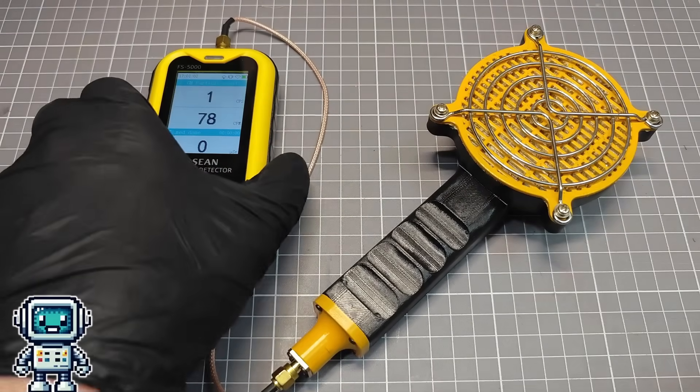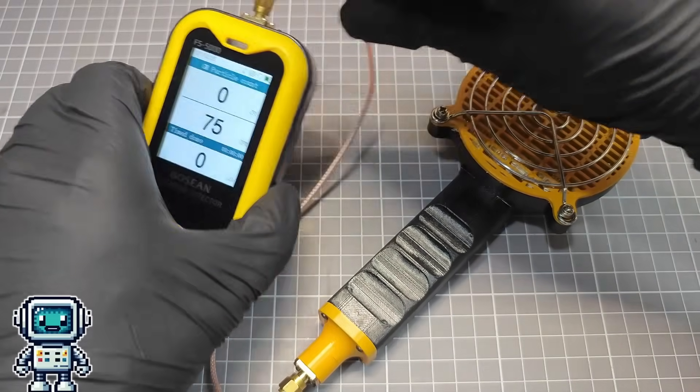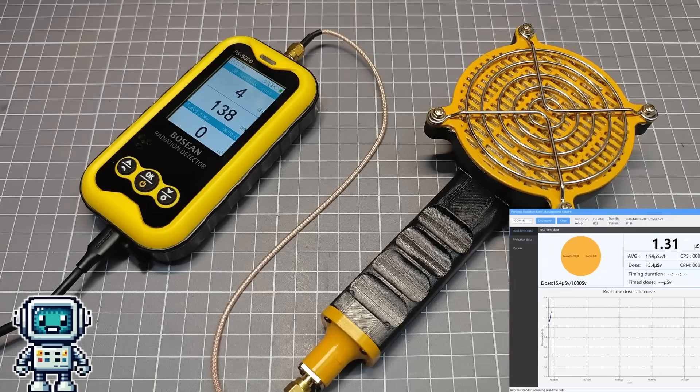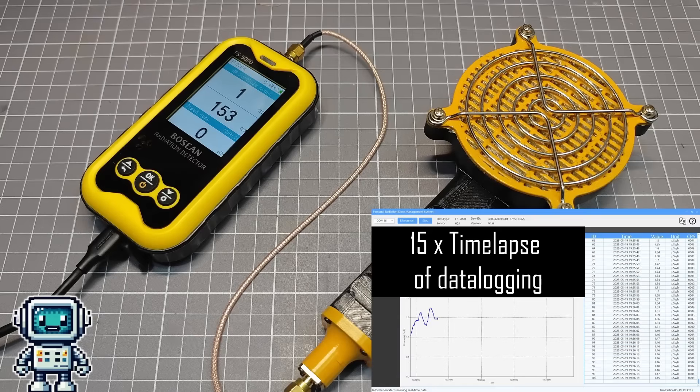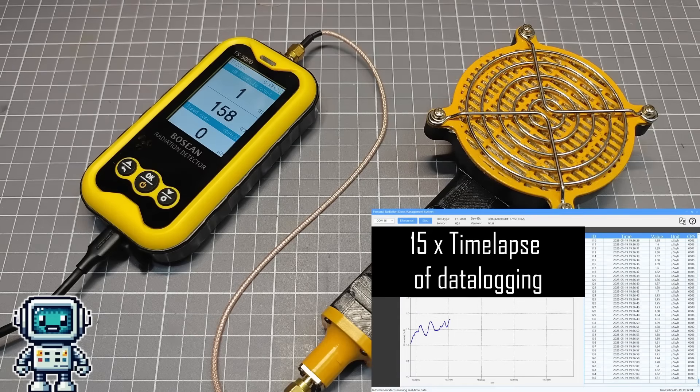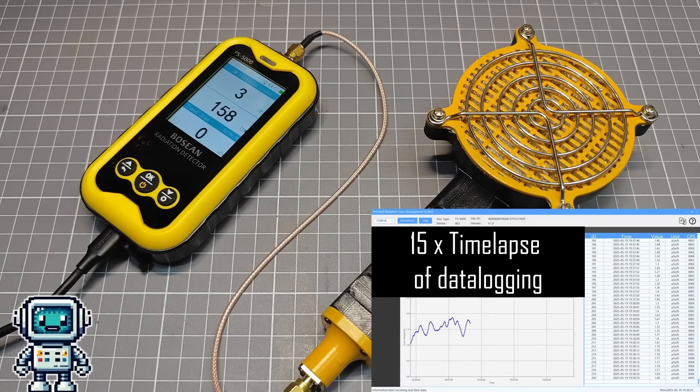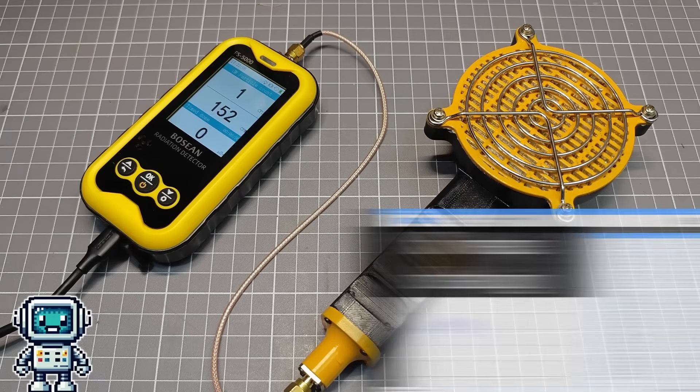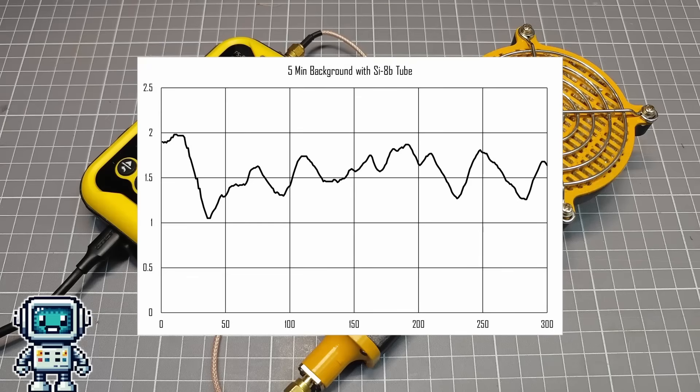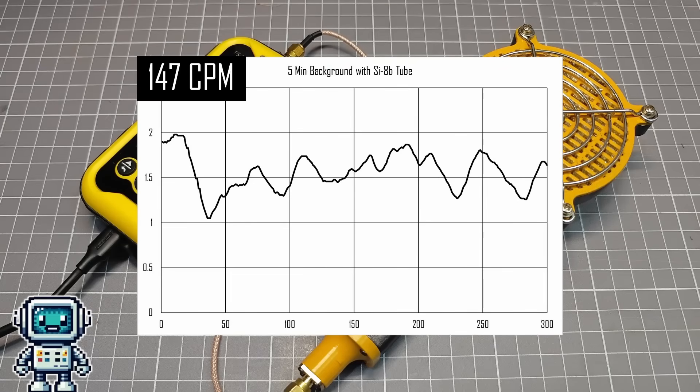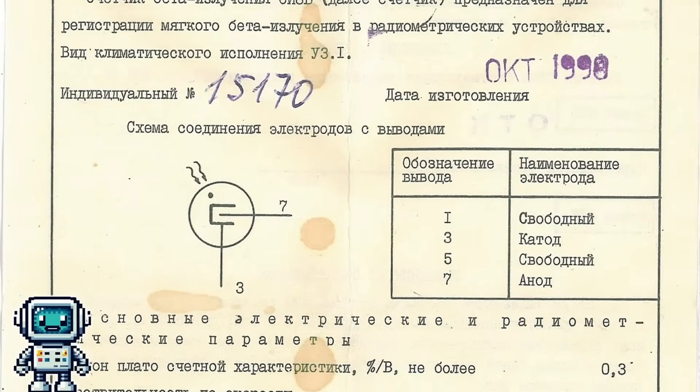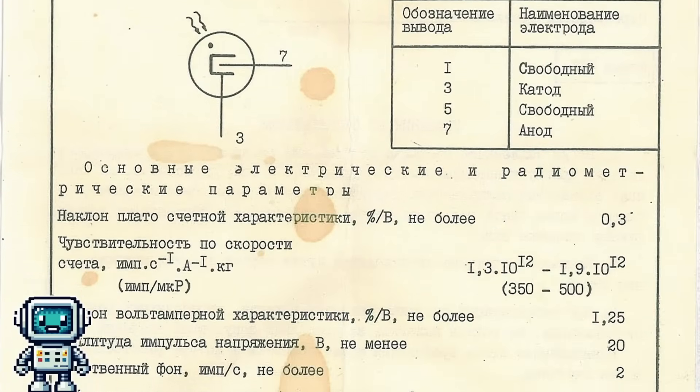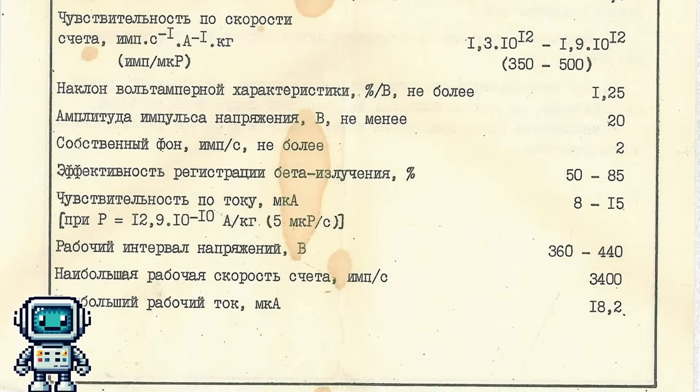Now, let's change over to this pancake probe and repeat this process. And now, for the moment of truth. How sensitive is this probe? Will the poorly matched event counter circuit in the FS5000 cause any significant issues? This tube is clearly more sensitive, but how much more sensitive? In the end, we get an average count rate of 147 counts per minute. That's an increase of about 4 and a half times. Which is a pretty disappointing result, we were expecting a sensitivity that was about 6 times that of the J321 tube.